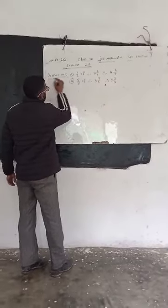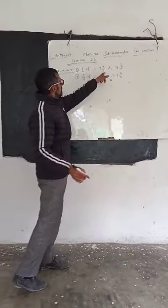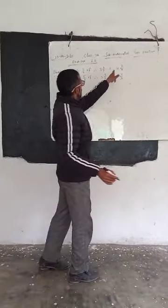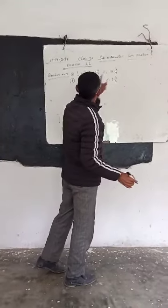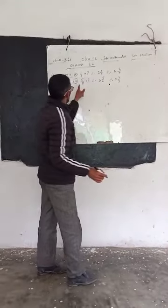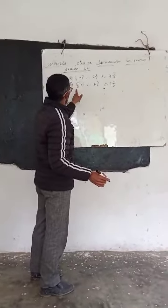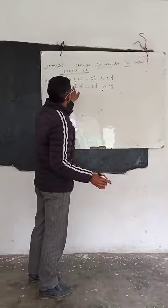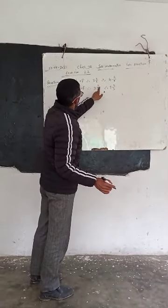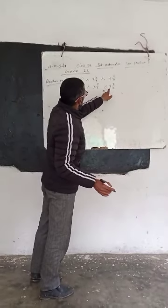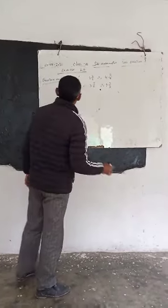So, question number 7: 1 half of 2 and 3 divided by 4, and 4 and 2 by 9. And part 5 is 3 and 3 by 6, and 9 and 2 by 3.